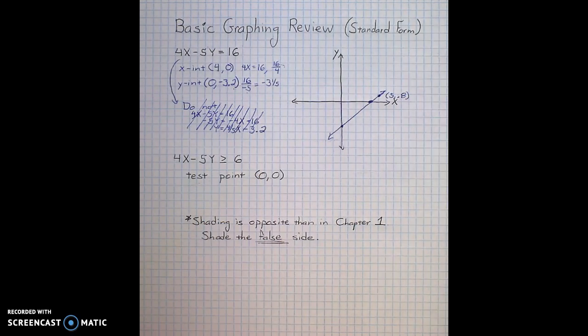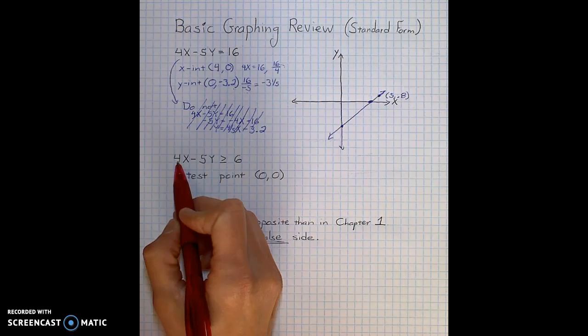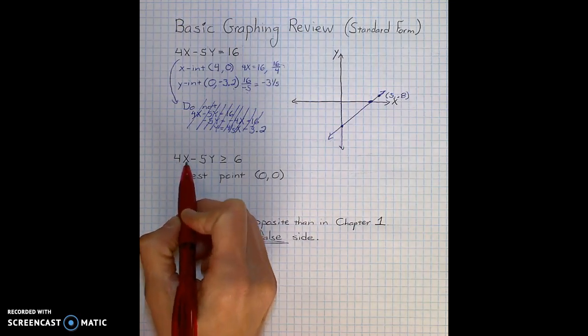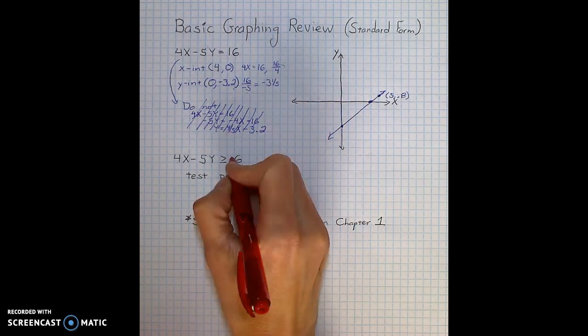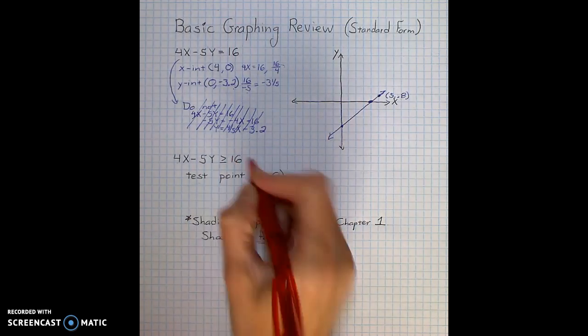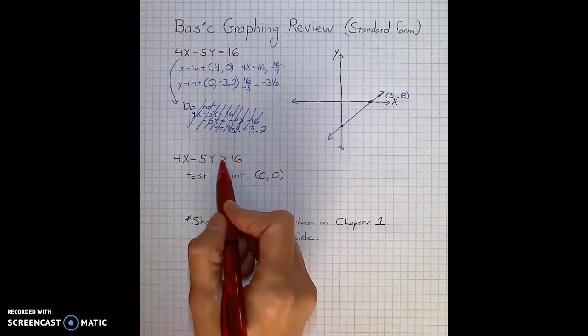One additional thing that you will be doing in chapter 3 is shading. So to review that, we would have had an inequality like 4x minus 5y is greater than or equal to 16. I wanted to use the same one as before, but this time with a greater than or equal to.